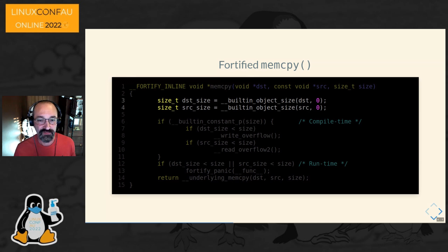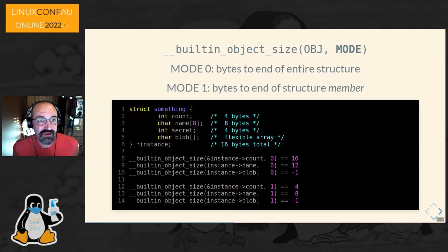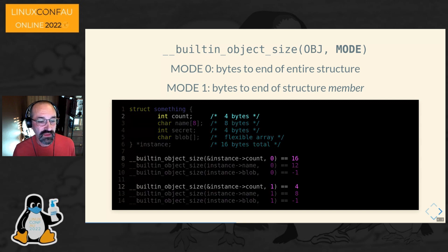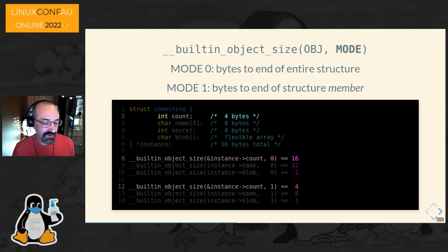The problem actually lies in the built-in object size call, where we say how big is our destination. Diving into built-in object size: that last parameter is what mode to use. In mode zero, we're actually measuring the outer structure, not what's being referenced directly — not the member itself. As an example, if we ask for a built-in object size of 'count' in mode zero, we actually get the answer of 16, because that's the full size of the remaining structure from 'count' on. This blocks a memcopy going beyond the end of a structure, but it doesn't help a memcopy going beyond the end of a structure member.